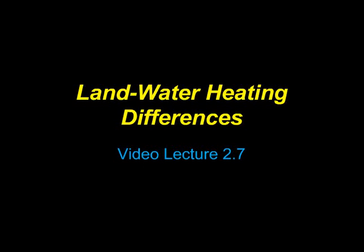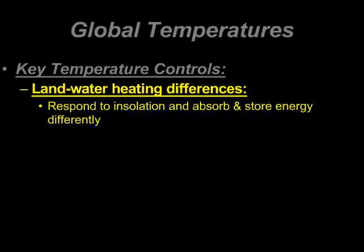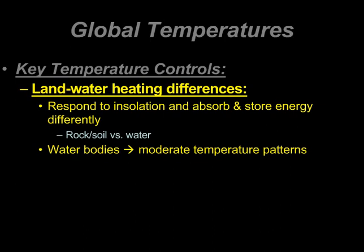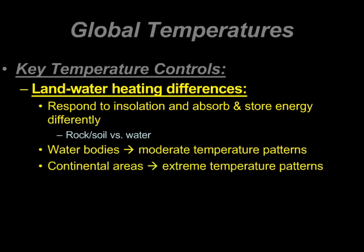Now we identify the fourth key control for temperatures on our surface, and that's land and water heating differences. This is due to the simple fact that land and water respond much differently to incoming solar radiation and absorb and store energy much differently. The key idea here is that water bodies help to moderate temperature patterns — you don't have as high highs or as low lows. Continental areas and large land masses tend to have extremes in their temperature patterns.